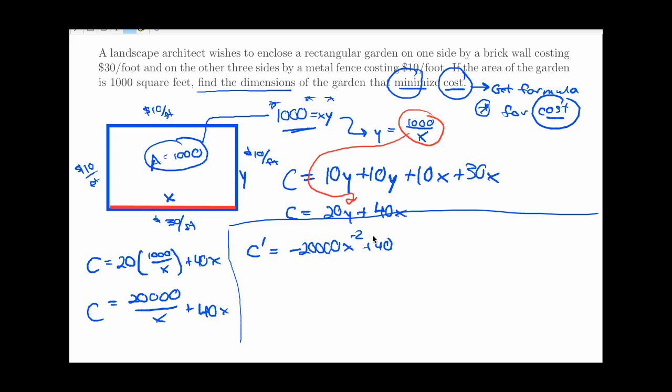My critical numbers here are places where the derivative is either 0 or undefined. The derivative could be undefined if x is equal to 0, because 0 to the negative 2 doesn't exist. But an x equal to 0 doesn't really make any sense in the problem, because you have to have some length for this side here to even have a garden and a fence. So 0 isn't really in play. If I set the derivative equal to 0, then I'll get another critical number. That would give me 40 equals 20,000 x to the negative 2. Multiply both sides by x squared, and I get 40 x squared equals 20,000. That means that x squared equals 500. And so x is the square root of 500. Obviously the negative part can't really be in play. The square root of 500 is about 22.36 feet.